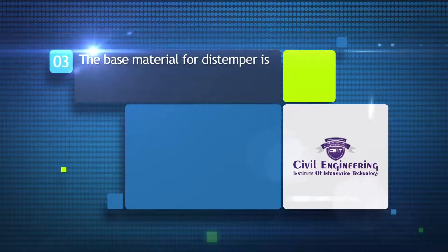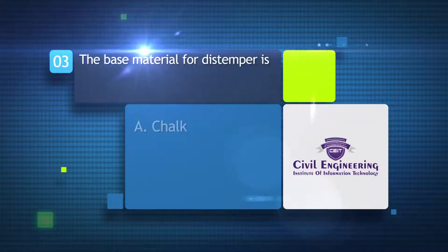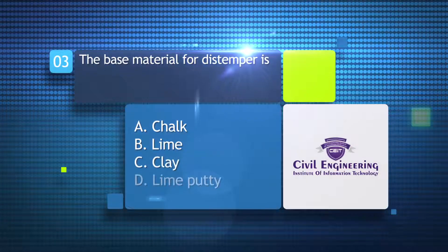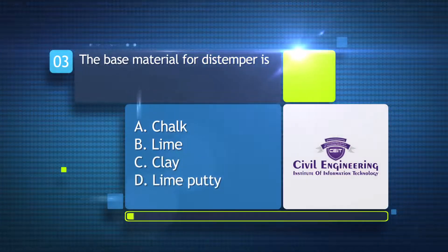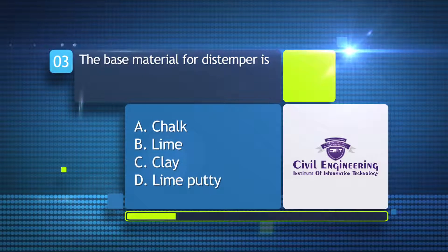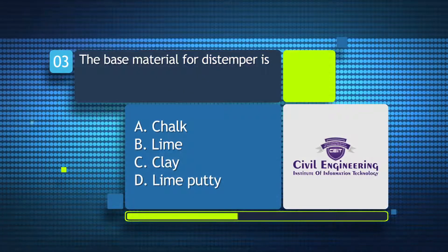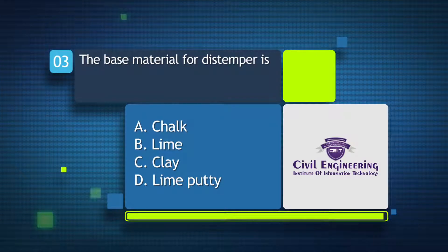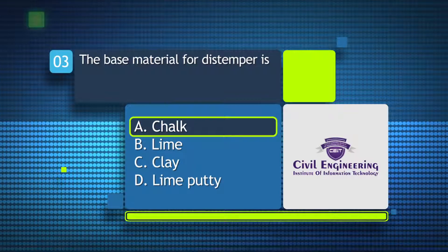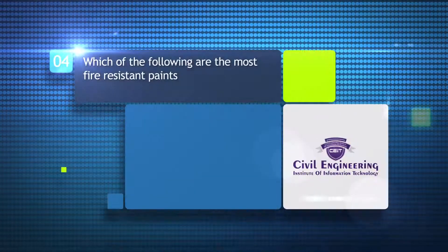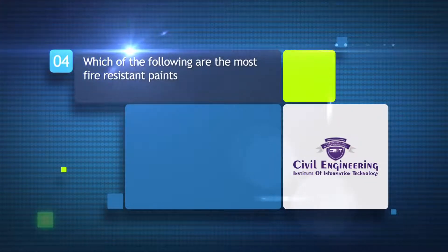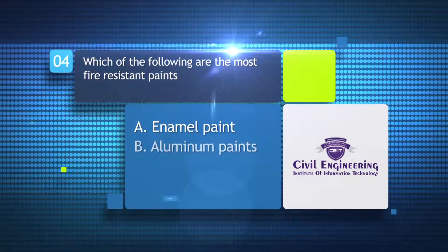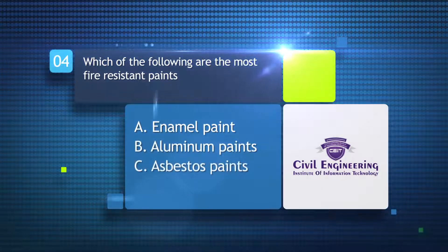The base material for distemper is: A) chalk, B) lime, C) clay, D) lime putty. Which of the following are the most fire resistant paints? A) animal paint, B) aluminum paints, C) asbestos paint, D) cement paints.